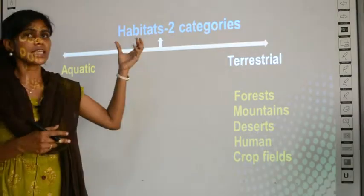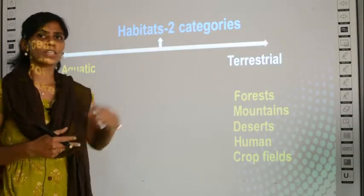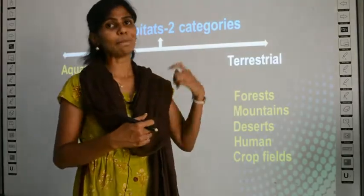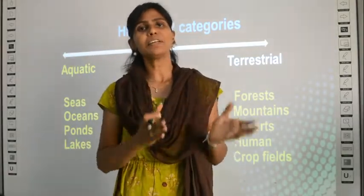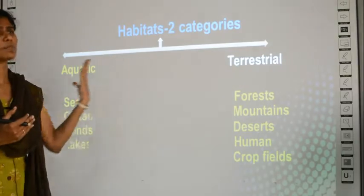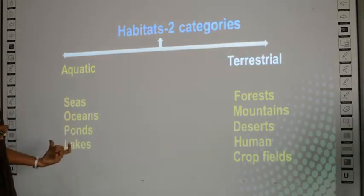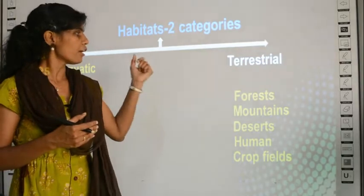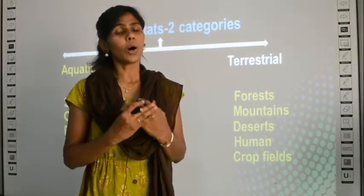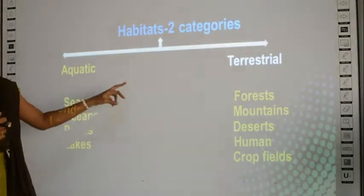Generally, habitats can be of two types. The first one is called aquatic habitat and the second one is called terrestrial habitat. Aquatic means water and terrestrial means land. For aquatic habitats, examples are seas, oceans, ponds, lakes, and rivers. For terrestrial habitats, forests, mountains, deserts, human settlements, and crop fields all come under terrestrial habitats.